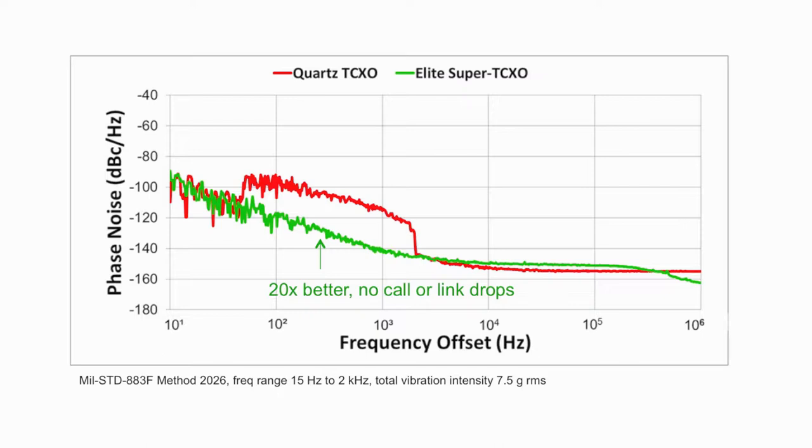By contrast, the MEMS oscillator plot in green shows no discernible increase in noise from the vibration. An increase in noise of 20 dB can result in lower data throughput due to increase in bit errors and worst case dropped communication links.